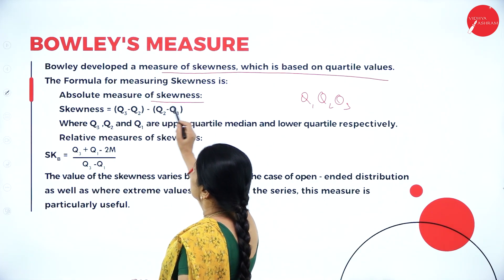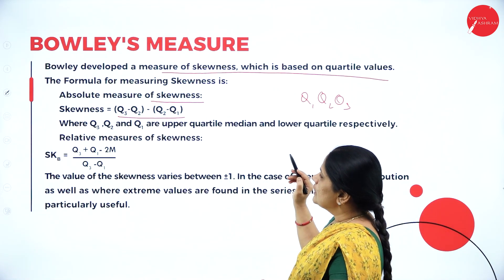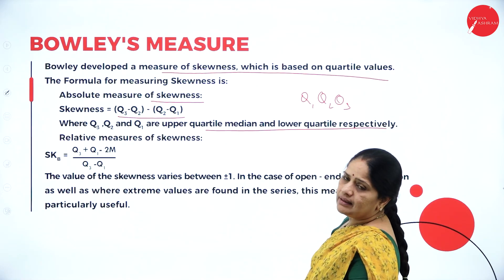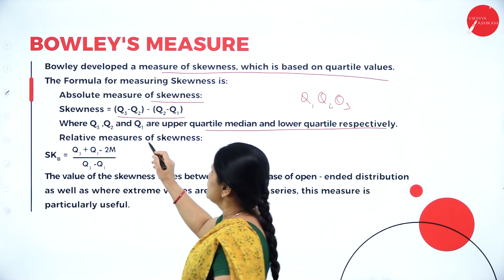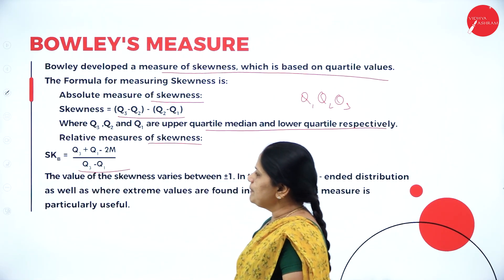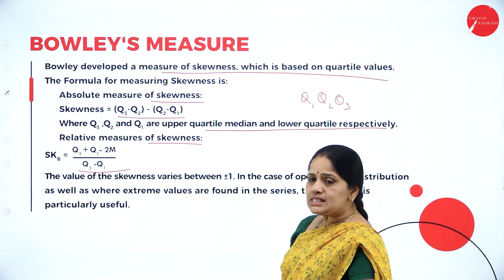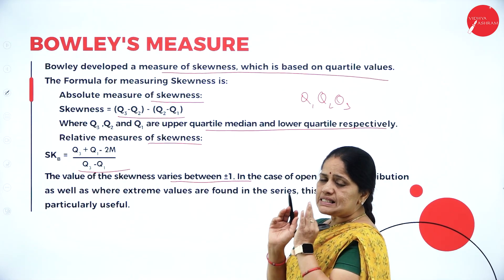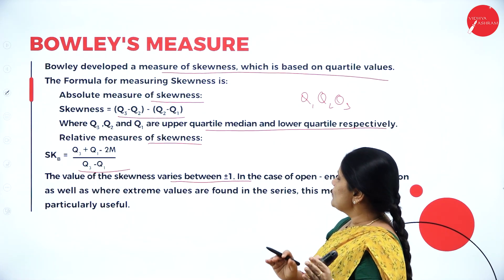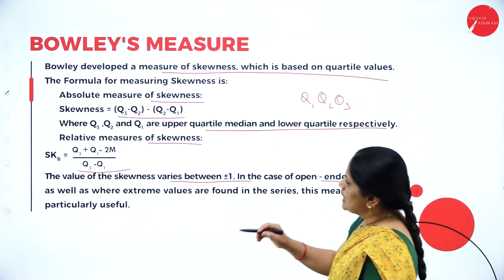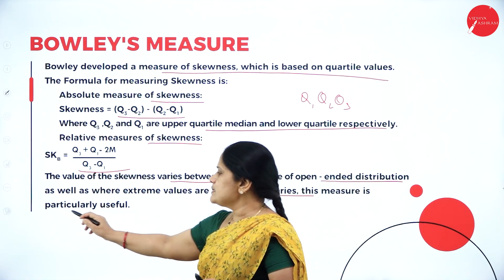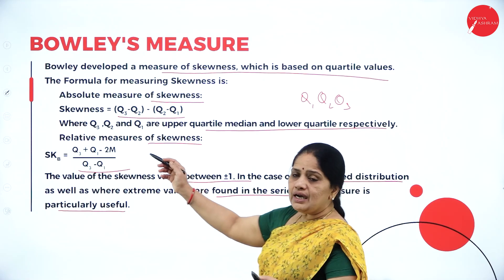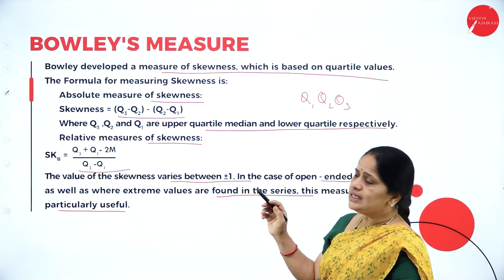The absolute measure of skewness has the formula: Q3 minus Q2 minus Q2 minus Q1, where Q3, Q2, Q1 are the upper quartile, median, and lower quartile respectively. For relative measures of skewness, the formula is: Q3 plus Q1 minus 2 median, divided by Q3 minus Q1. The value of skewness varies between plus 1 and minus 1. This measure is particularly useful for open-ended distributions and where extreme values are found in the series.